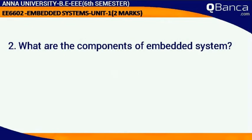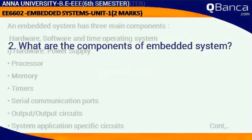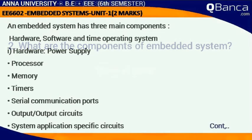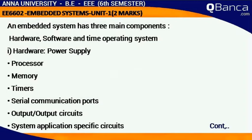What are the components of an embedded system? An embedded system has 3 main components: Hardware, Software, and Real-Time Operating System. Hardware includes: Power Supply, Processor, Memory, Timer, Serial Communication Port,